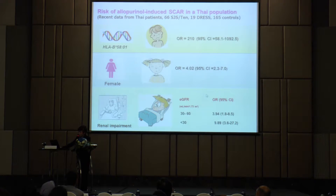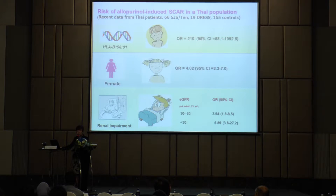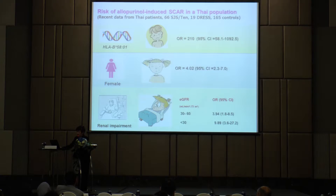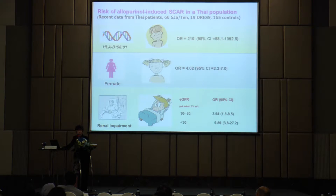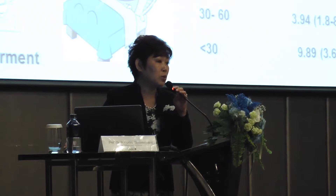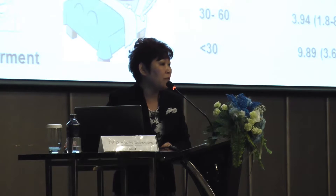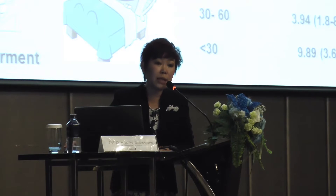We are about to publish one article on allopurinol-induced Stevens-Johnson syndrome. We have identified that not only HLA-B*5801 is a risk factor for SJS, TEN, and DRESS—the sex or gender of patients also matters: females are at four-fold higher risk of developing SJS, TEN, or DRESS from allopurinol. Patients with renal impairment also have higher risk of allopurinol-induced SCAR. So you have to be careful when prescribing allopurinol: check 5801, be careful in female patients, and be careful in patients with renal impairment.